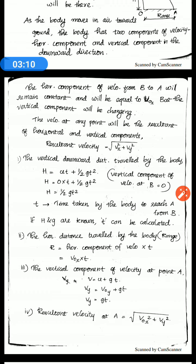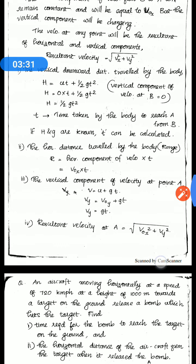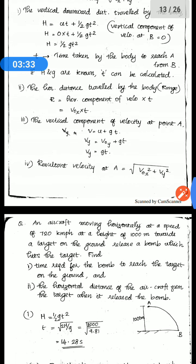So vy equals v₀y plus g times t. Since the initial vertical component is 0, we can write vy equals g times t, where t is the total time taken by the body to reach point A. The resultant velocity is the square root of v₀ₓ² plus v₀ᵧ².